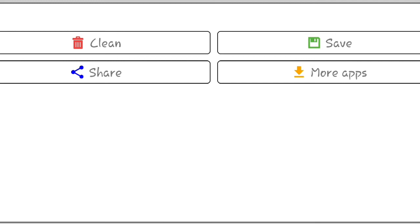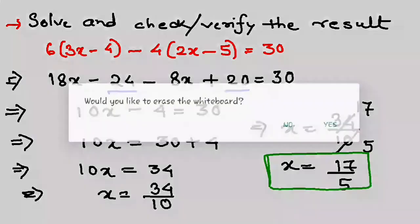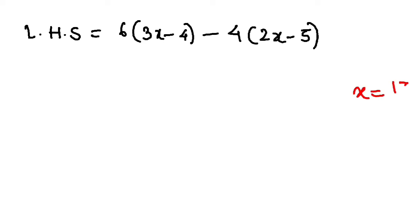Let us take the left hand side now and calculate. So your LHS is 6(3x - 4) - 4(2x - 5). What is my value of x? I got x equal to 17 by 5. So I will put x equal to 17 by 5 here.